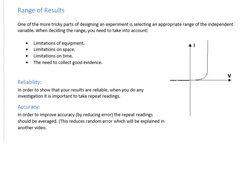The other thing to think about with your readings is how you can increase reliability and accuracy. By taking repeat readings at the same potential difference, you're able to demonstrate that your result is reliable — you should get the same result each time. Repeat readings are also good for improving accuracy: by calculating the average of your repeat readings, you can remove something called random error, thereby reducing it and increasing accuracy. These are all things to consider when choosing what readings to take.